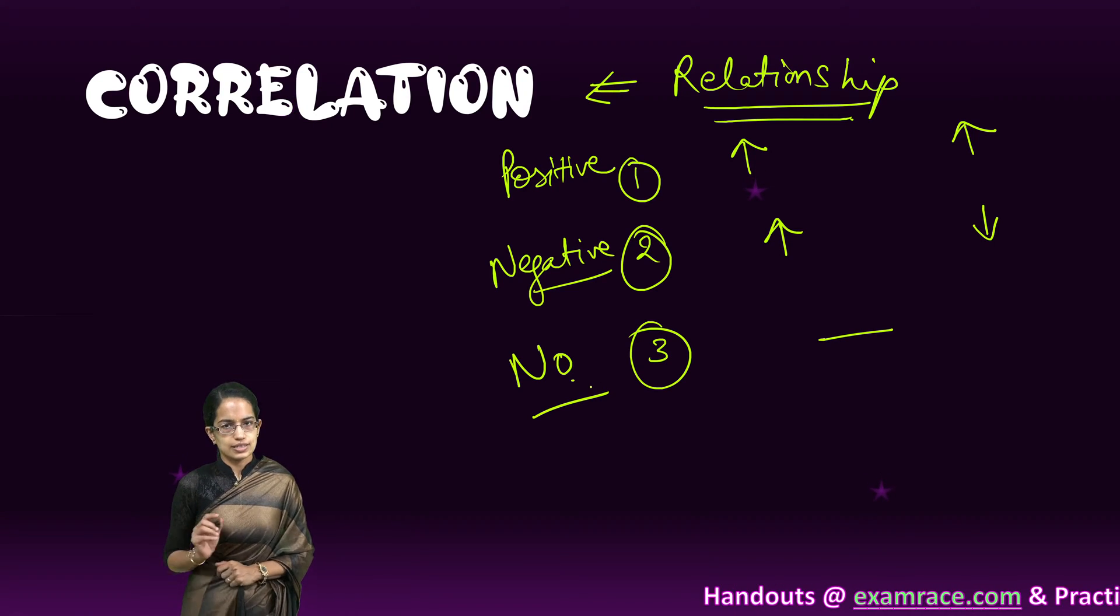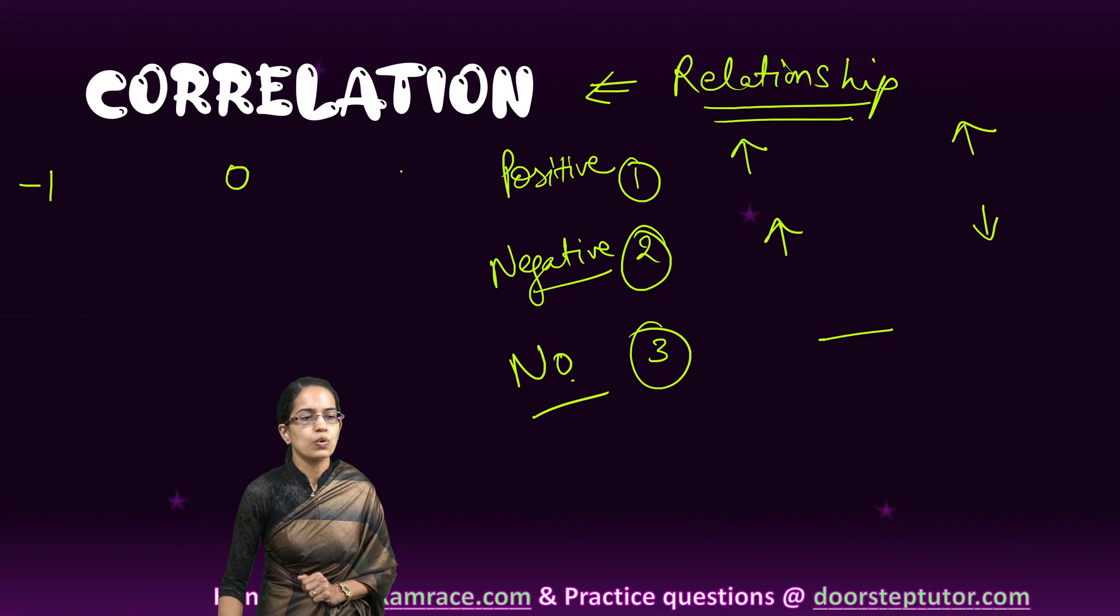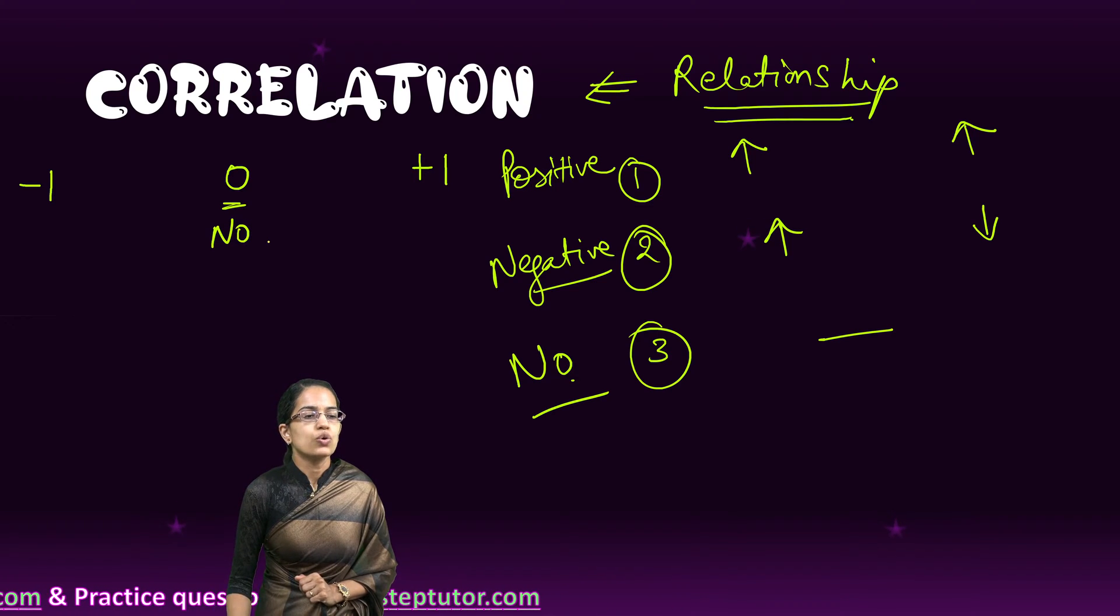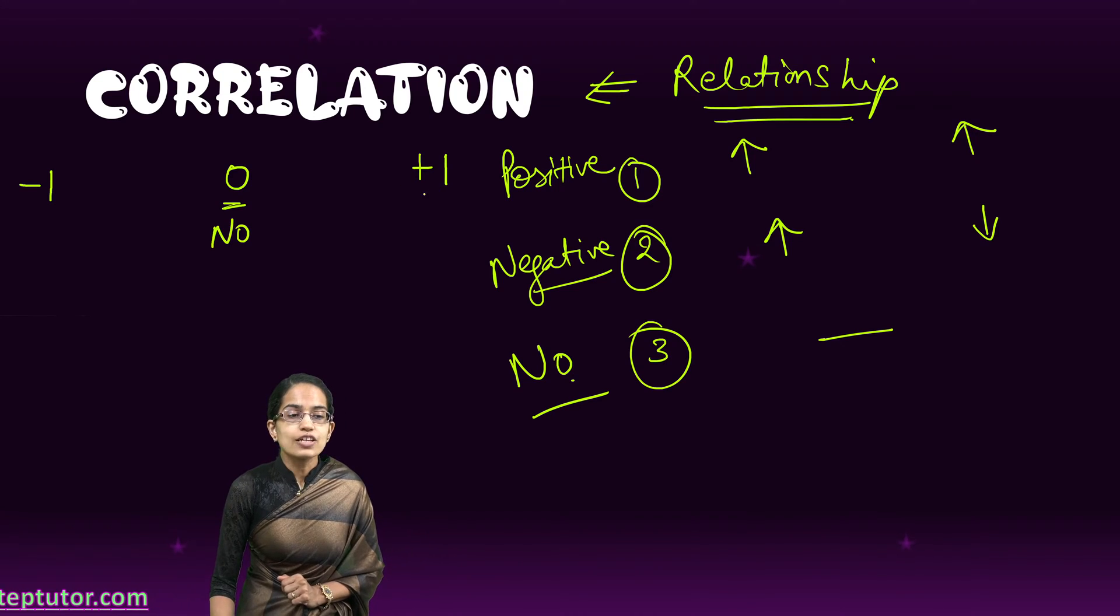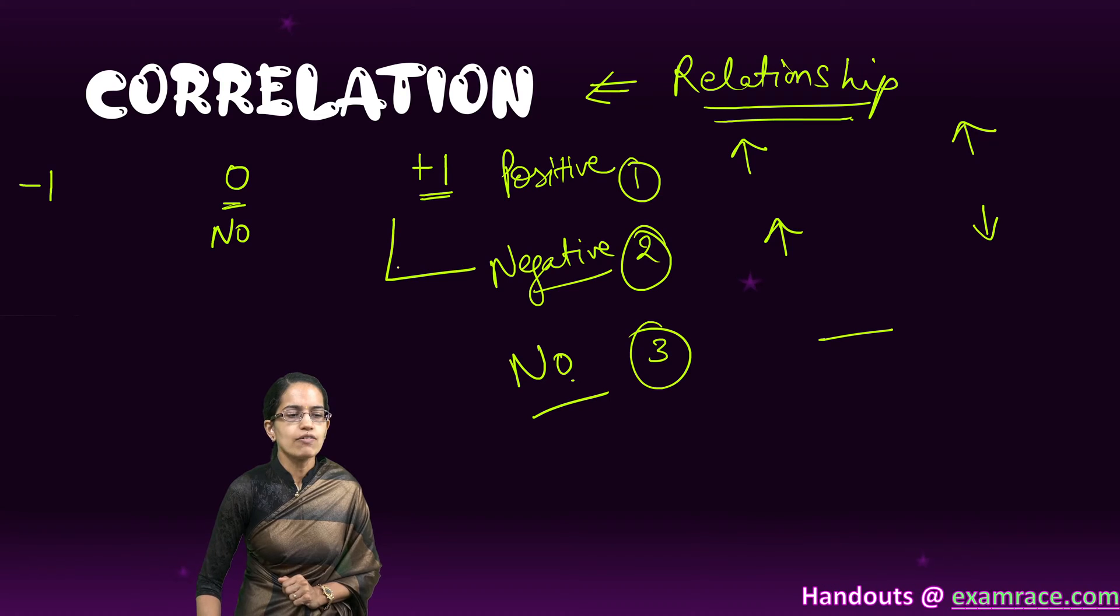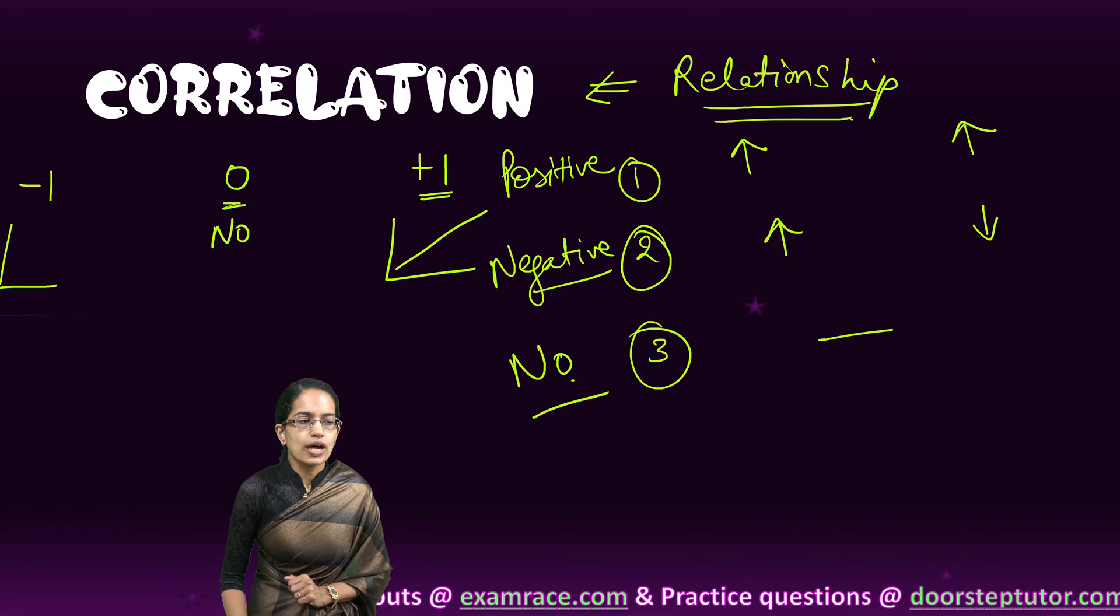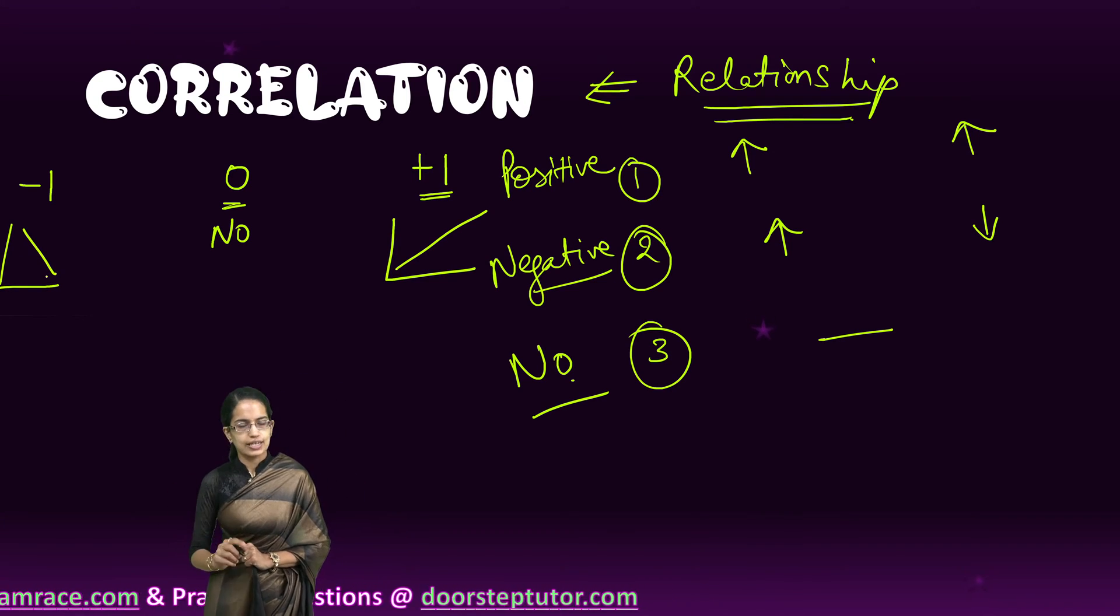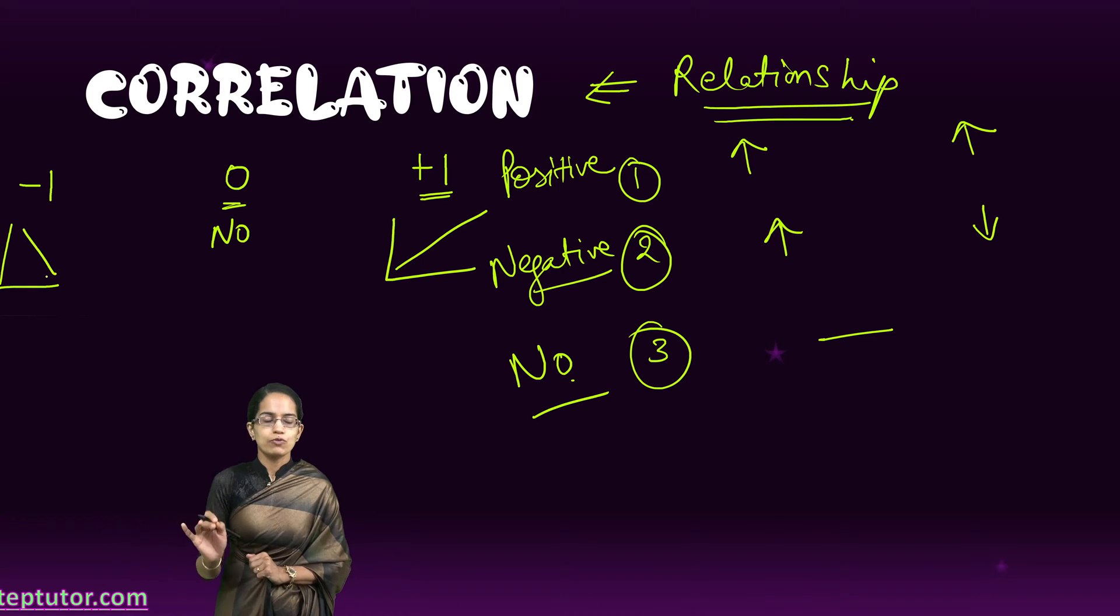Correlation is expressed from minus 1 to 0 to plus 1. Any value which is 0 indicates there is no relationship, no correlation between the two variables. A value of plus 1 indicates a perfect positive correlation, you would have a straight line graph. A value of minus 1 represents a perfect negative correlation, a straight line declining. If my input is increasing, the output would decrease, but it is a perfectly negative correlation.